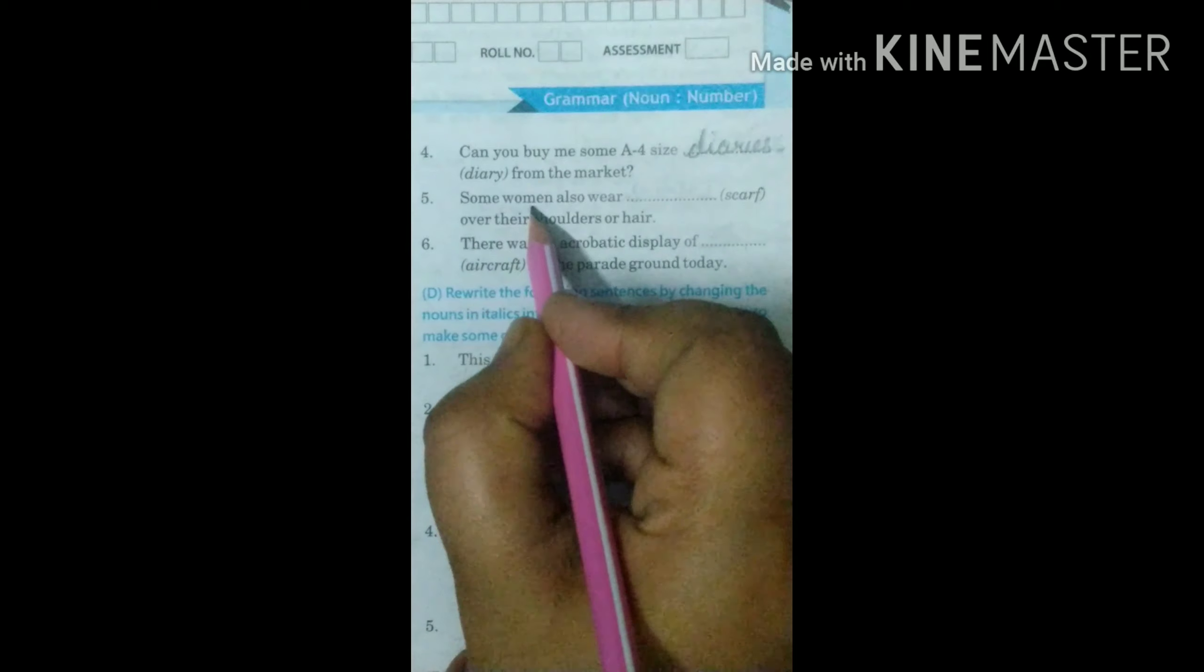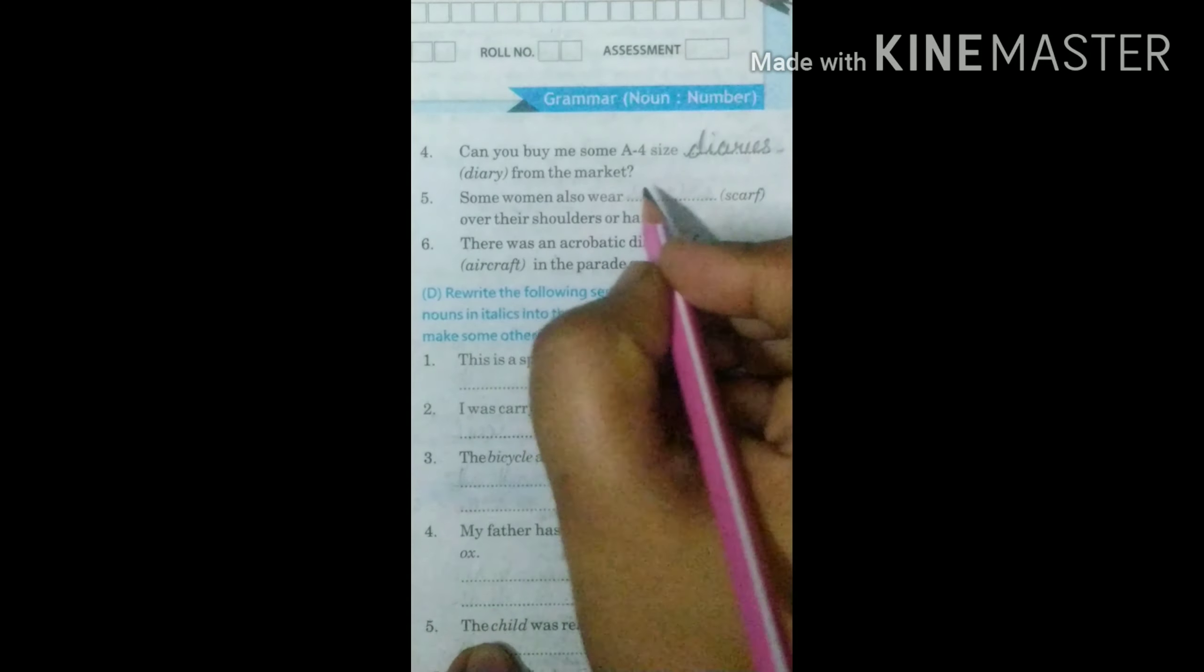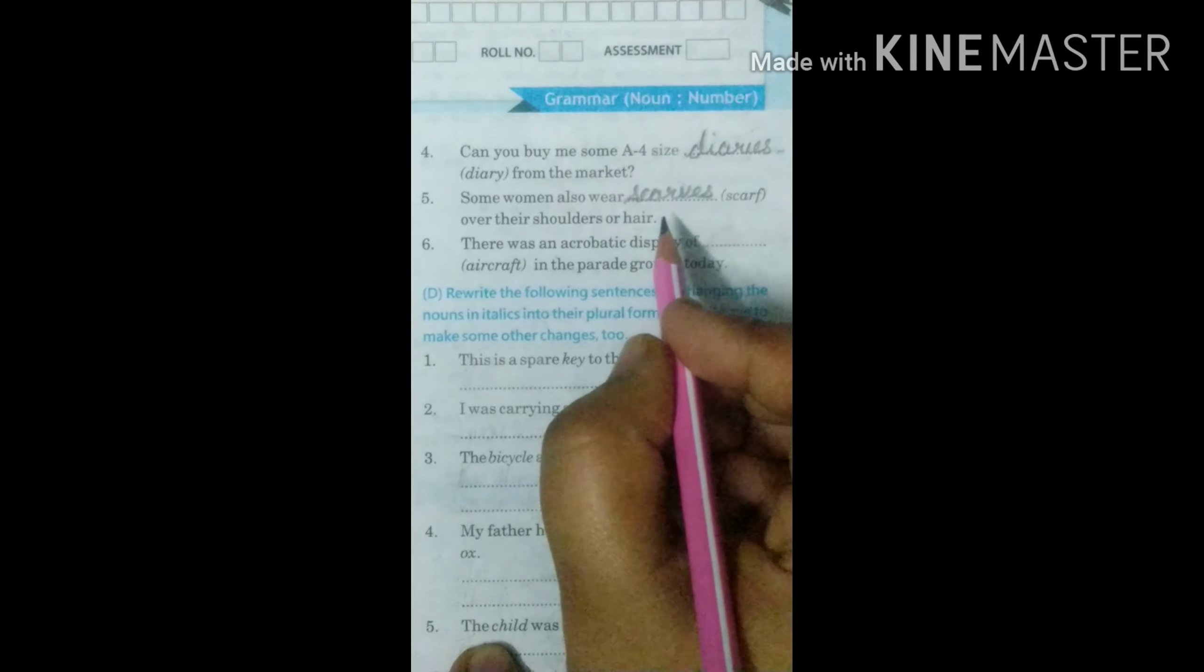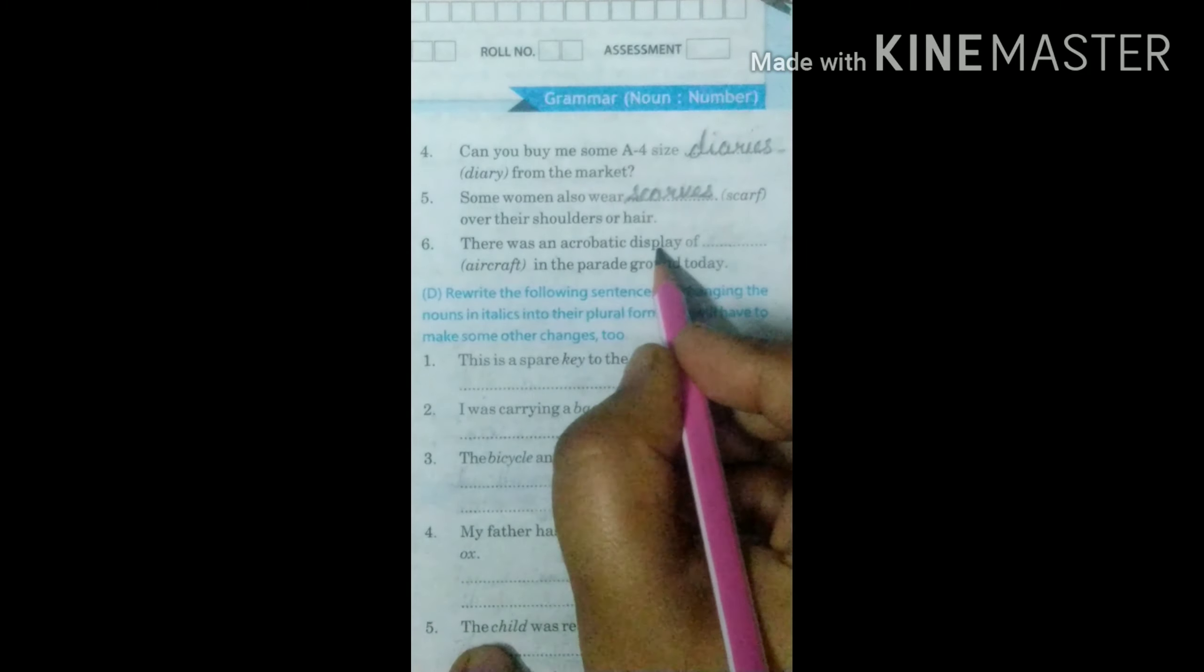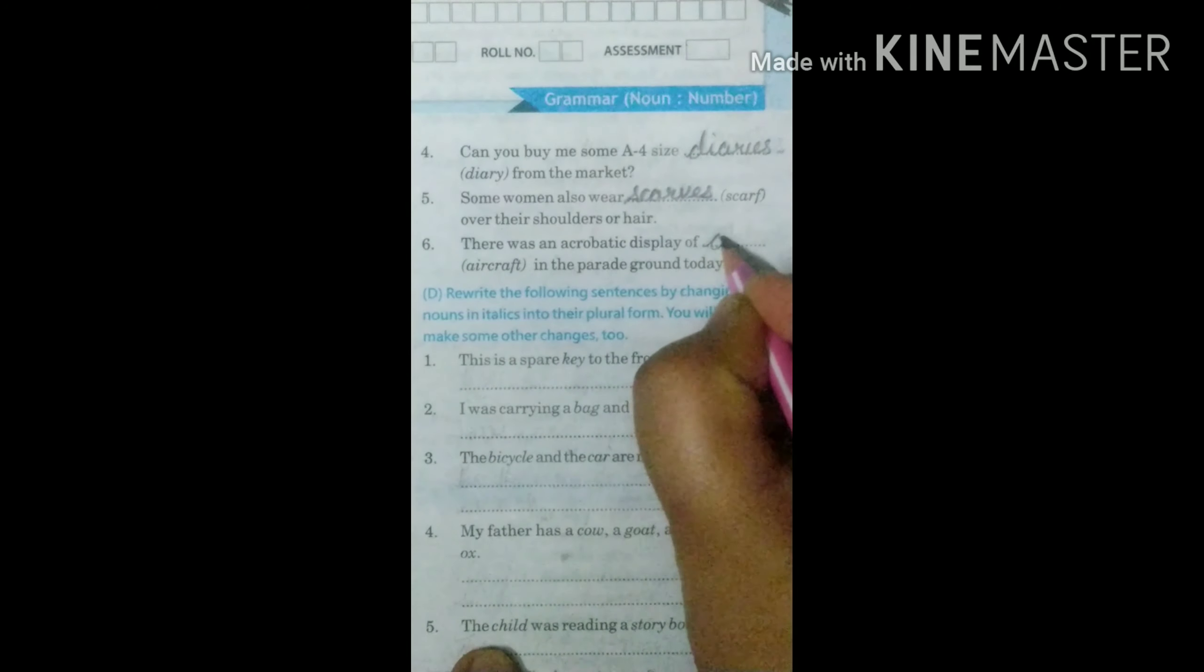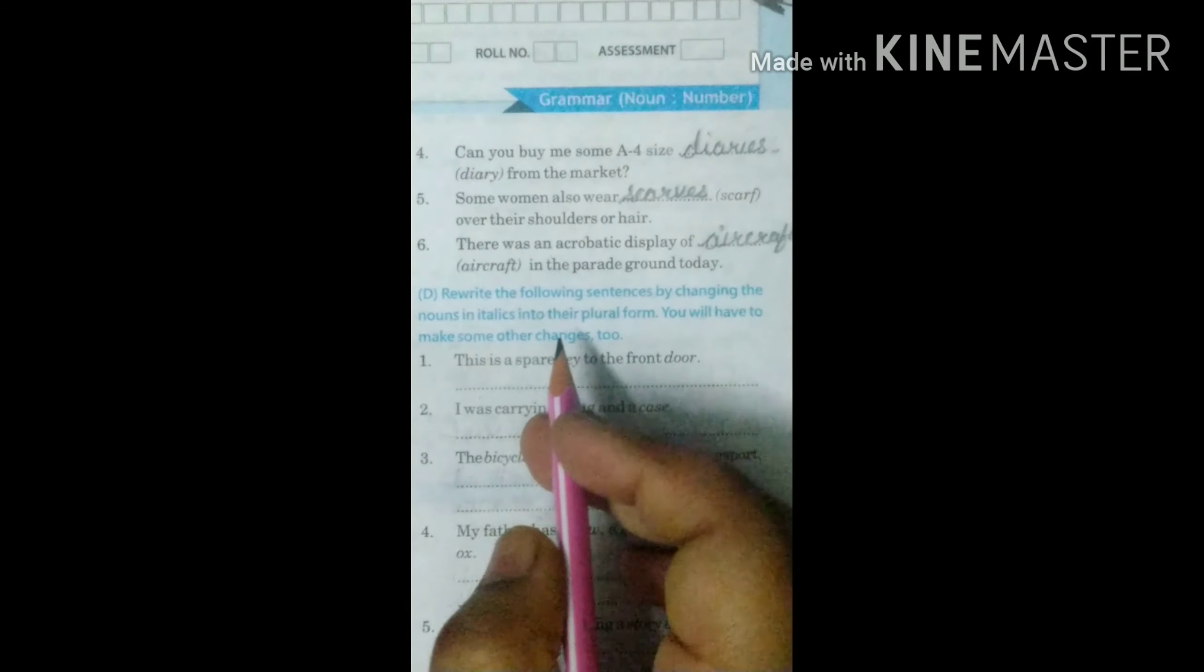Some women also wear dash over their shoulders or hair. The word is scarf. So we will make it plural by putting VES at the end. That is scarves. There was an acrobatic display of dash in the parade ground today. What will be here? Aircraft. It will remain same in the plural form. Some words remain same in plural. Just like sheep.